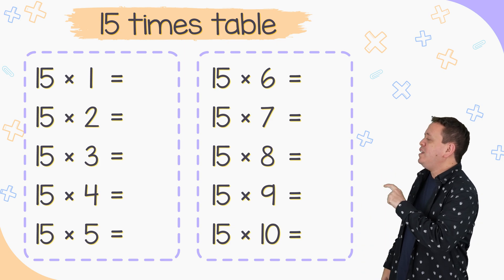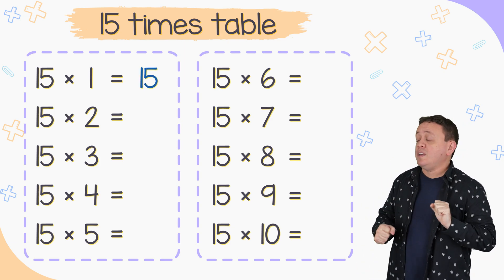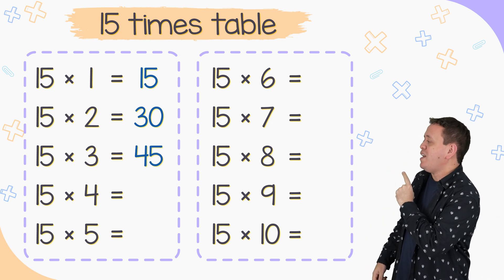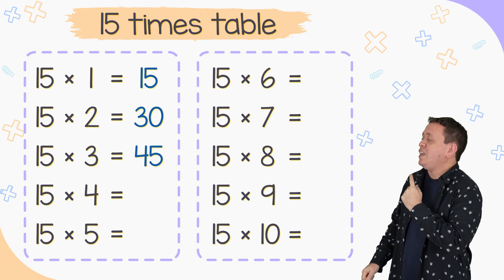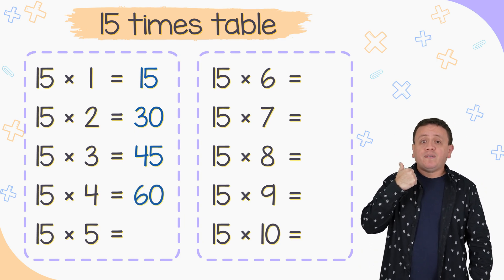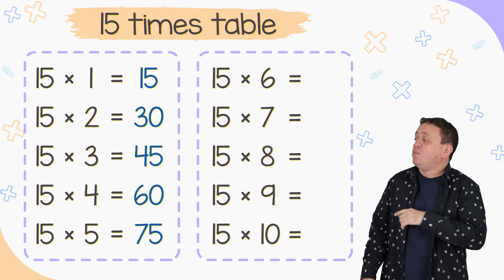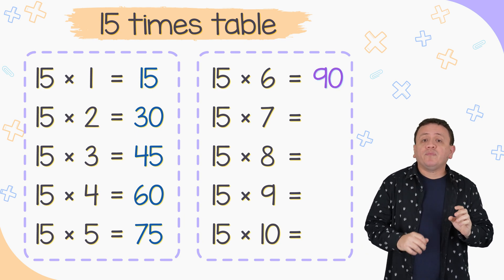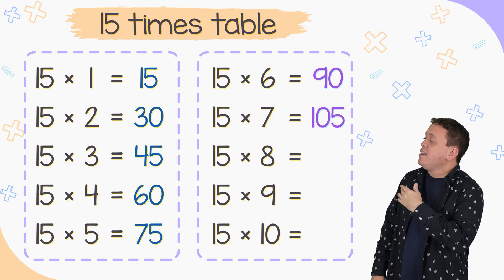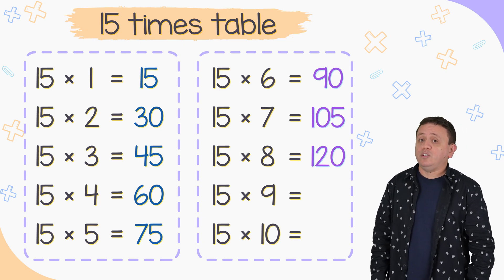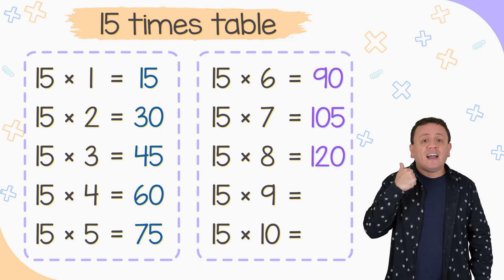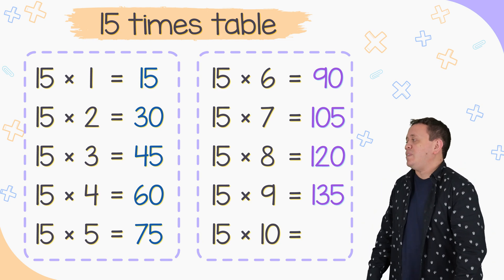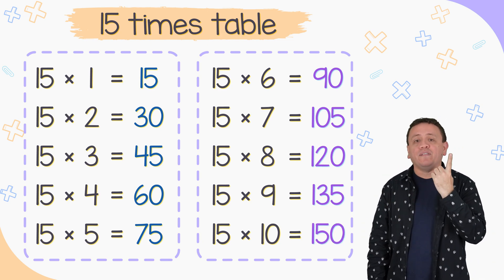The 15 times table is one of my favorites. 15 times 1 equals 15. 15 times 2 equals 30. 15 times 3 equals 45. And 15 times 4 equals 60. The next one: 15 times 5 equals 75. 15 times 6 equals 90. 15 times 7 equals 105. 15 times 8 equals 120. 15 times 9 is equal to 135. And last but not least, 15 times 10 equals 150.